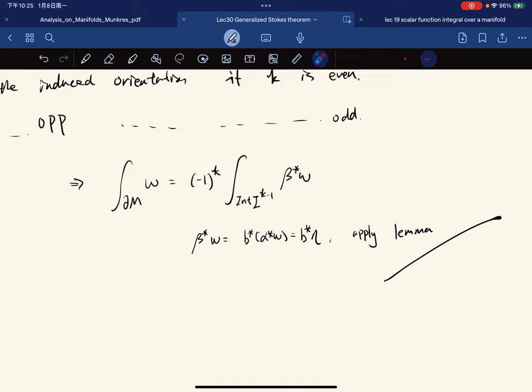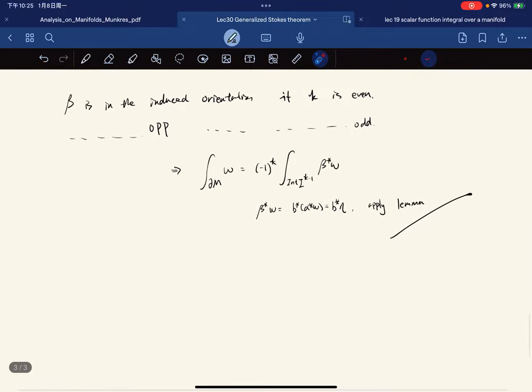We have this, dp equal to this. Then we apply the lemma. We have done. And we have proven the generalized Stokes theorem.